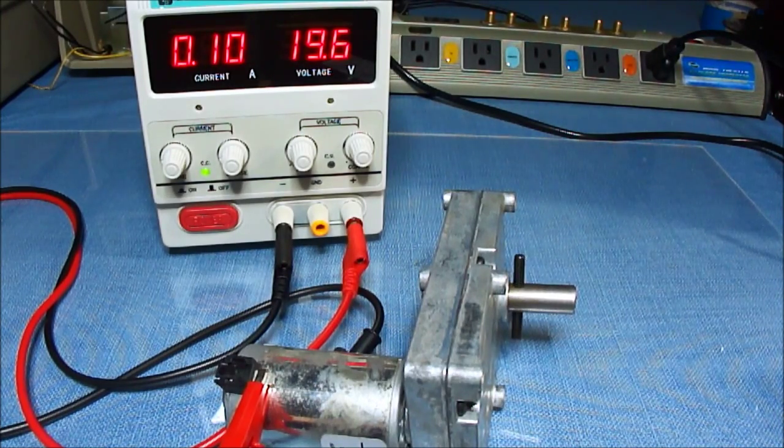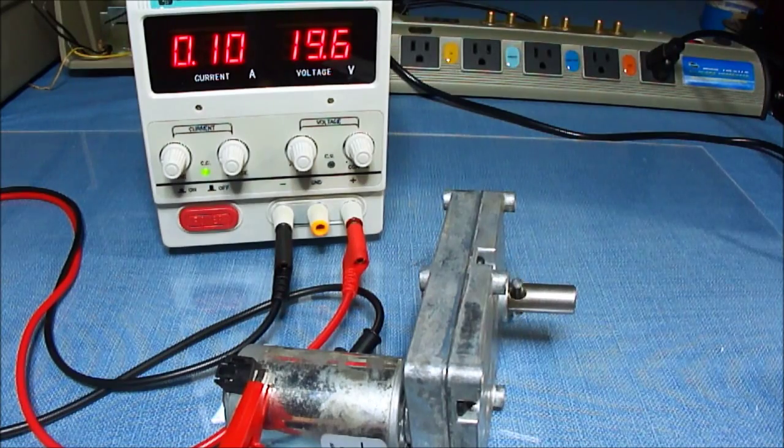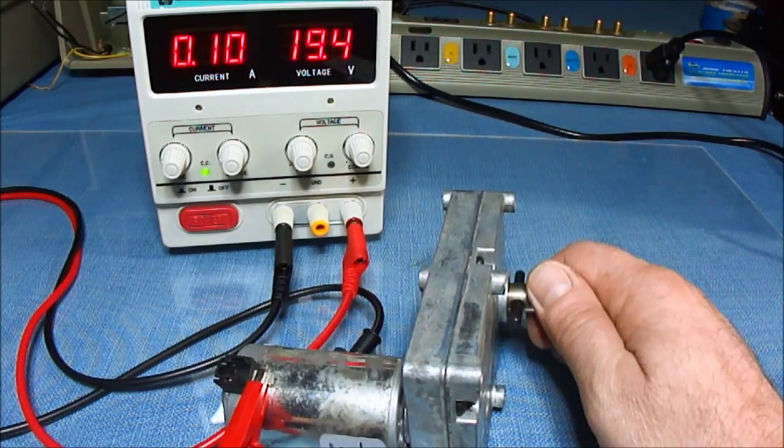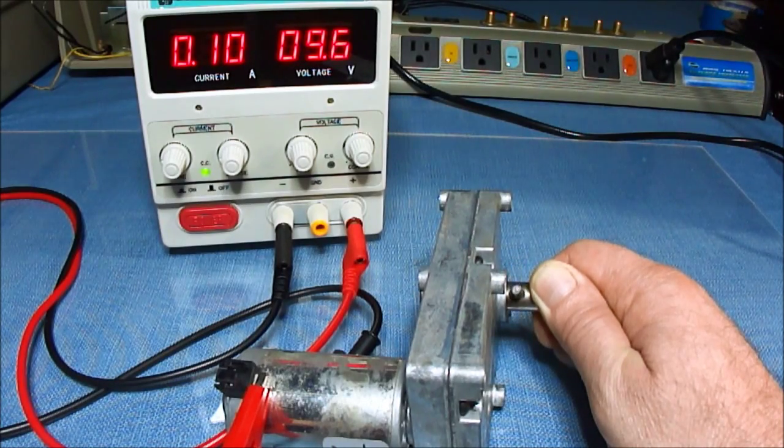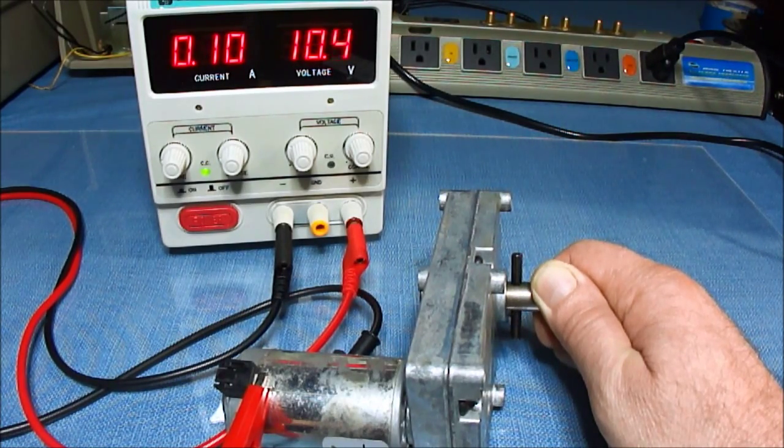Right now I have the current limited to 100 milliamps. And when I apply a load to it, it slows down but the torque remains pretty much the same.